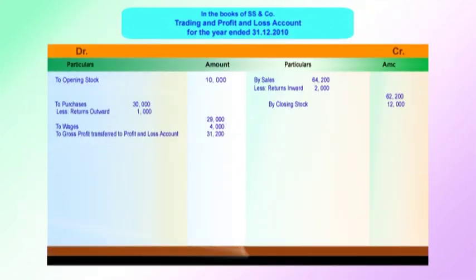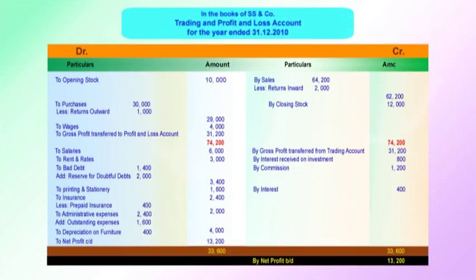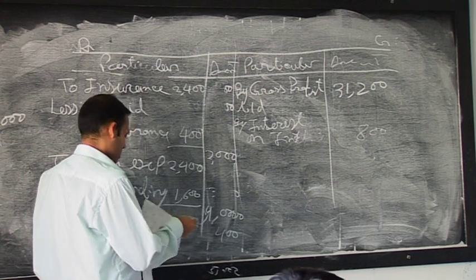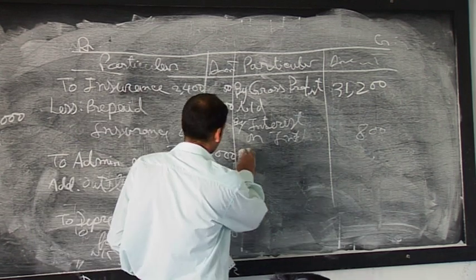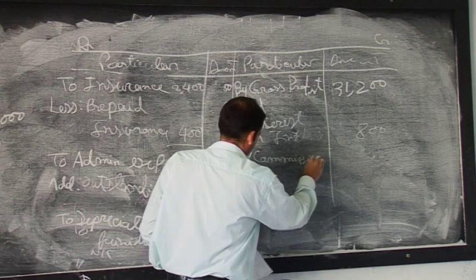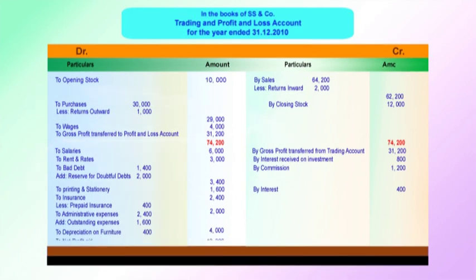Now the credit side of the profit and loss account — all incomes from the trial balance. Interest received on investment: rupees 800. Commission received: 1,200. Interest received: 400. These are all the incomes on the credit side, and the expenses we have listed are on the debit side.